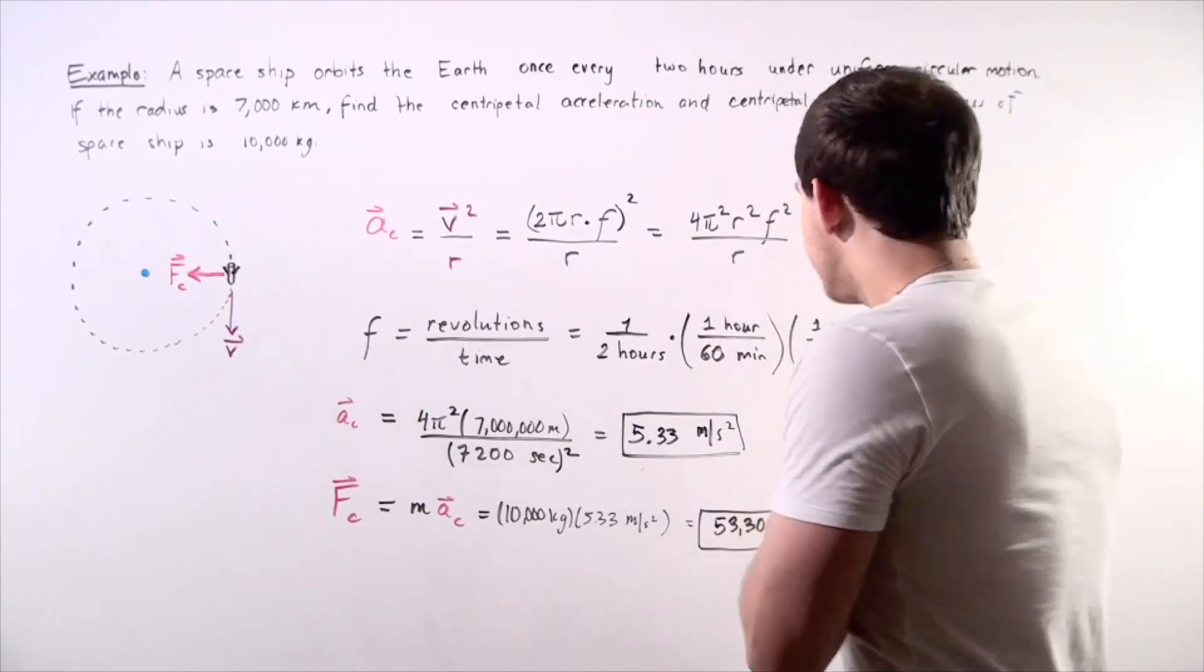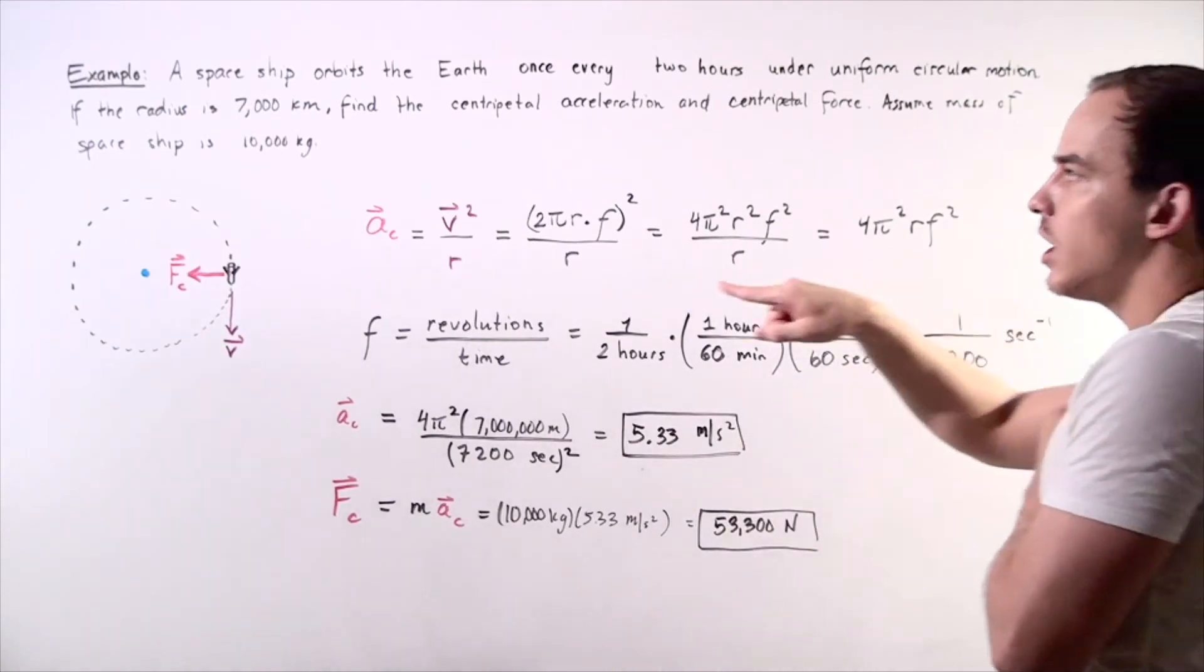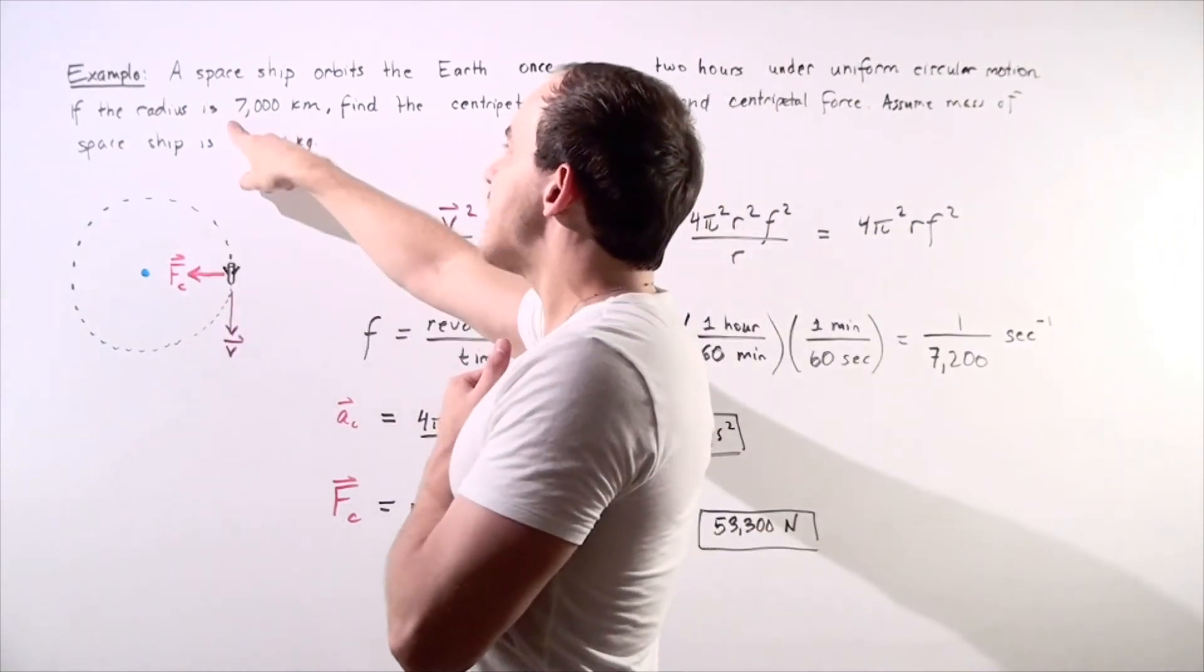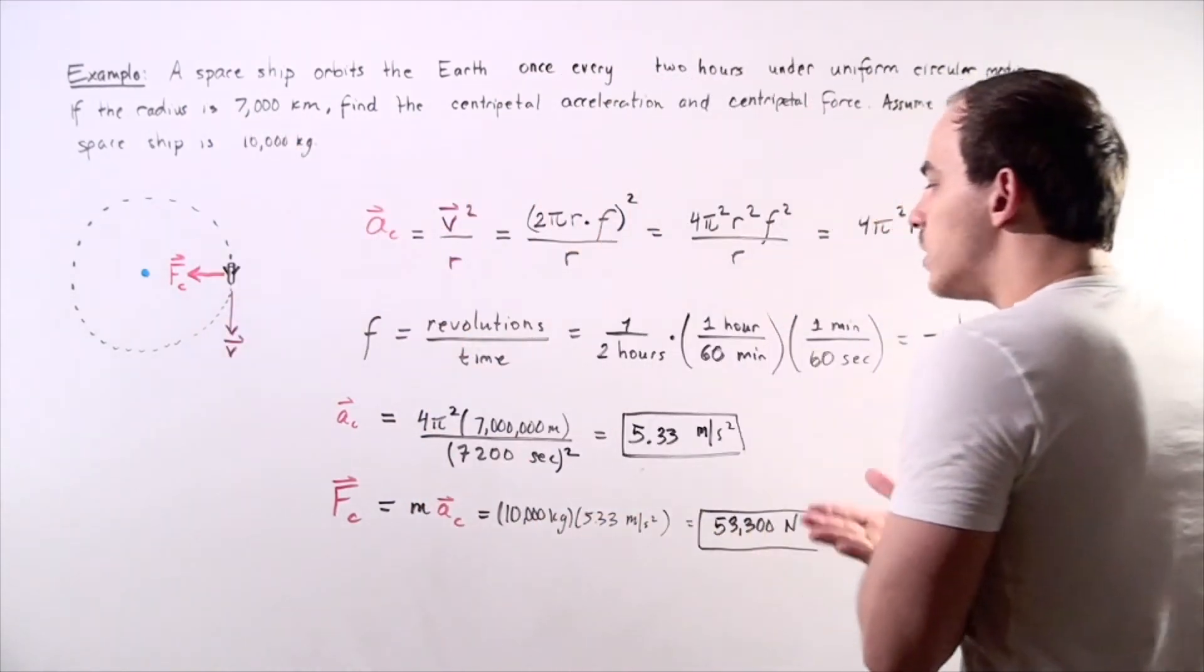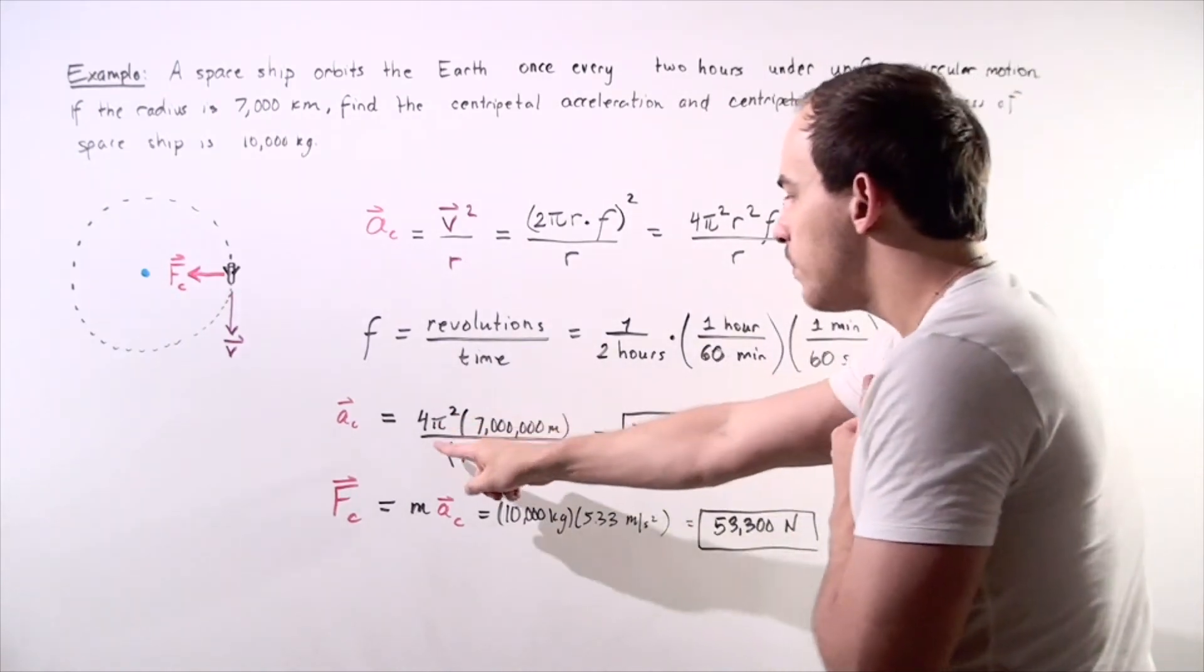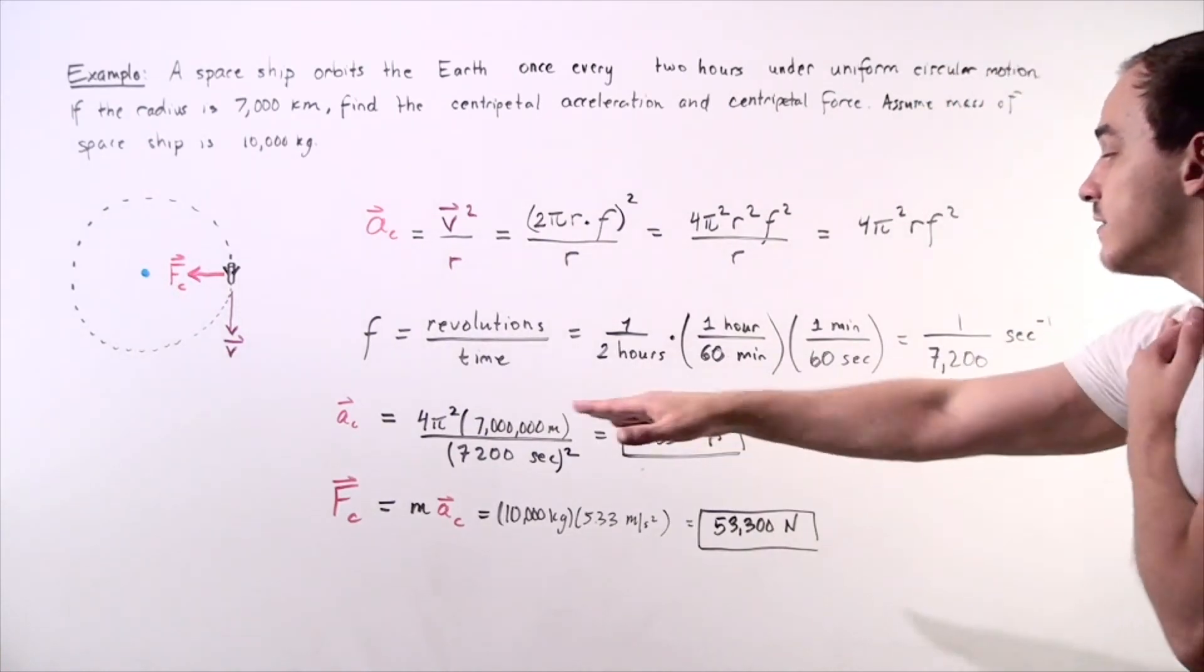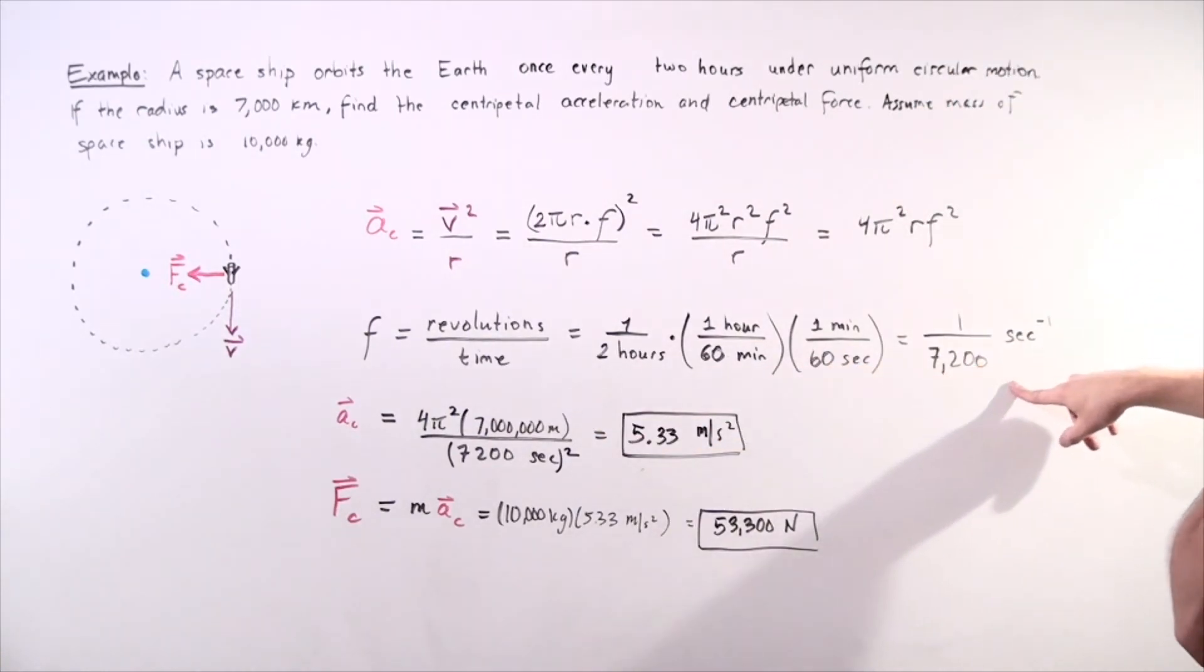Now we essentially plug this into the calculator. We have 4 pi squared times R, where R is 7,000,000 meters, because we want to use meters and not kilometers. So we have 4 pi squared multiplied by 7,000 meters divided by this number squared.